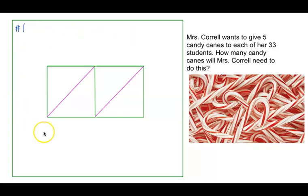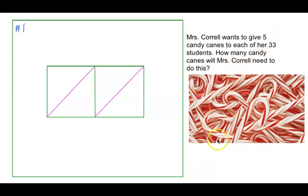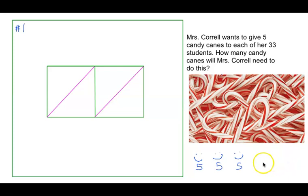Remember, you are only responsible for writing what is inside this big green box here. You do not have to copy the problem, but I will read it to you. Mrs. Carell wants to give five candy canes to each of her 33 students. How many candy canes will Mrs. Carell need? If I gave one kiddo five candy canes, and the next kiddo five candy canes, and another kiddo five, I've only gotten three students done. I'd have to draw 33 faces and add it all up. Since we're adding the same number each time, we can multiply because multiplication is repeated addition.